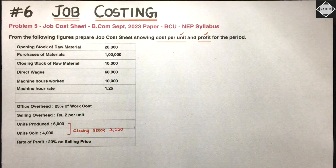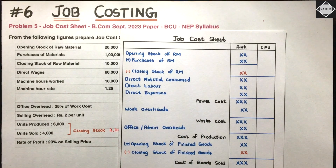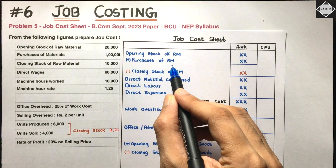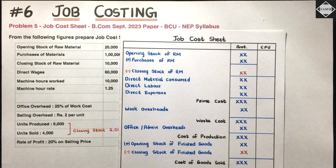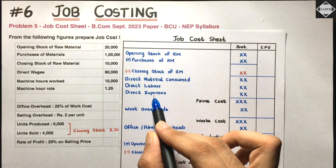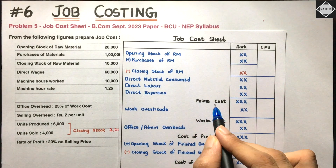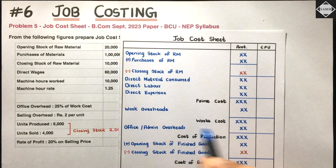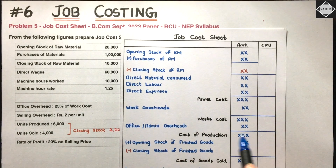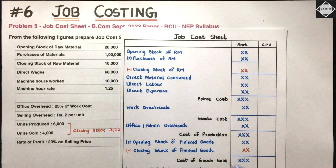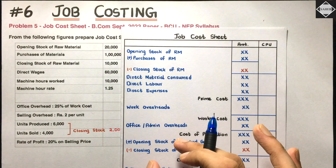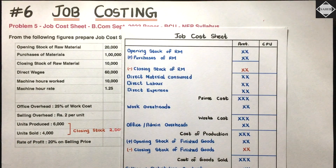Let's discuss the format first. In the job cost sheet, you first take direct material — opening stock of raw material plus purchases of raw material minus closing stock of raw material — to get how much direct material has been consumed. Then direct labor, direct expenses, and adding these you get prime cost. To prime cost you add factory or production overheads to get works cost or factory cost. Then add office and admin overheads to get cost of production. After that you take finished goods opening stock (add) and closing stock (subtract).